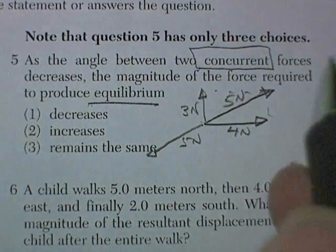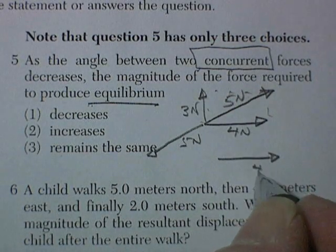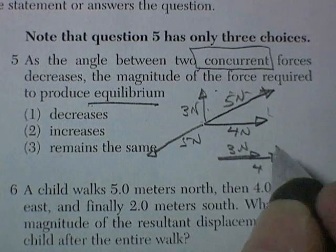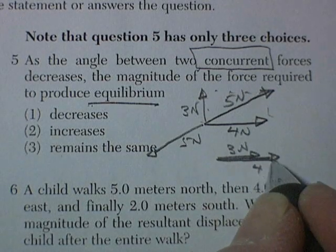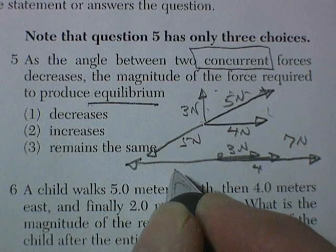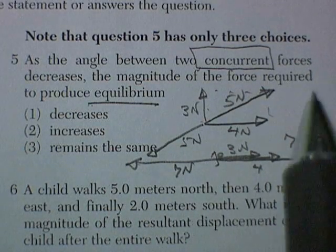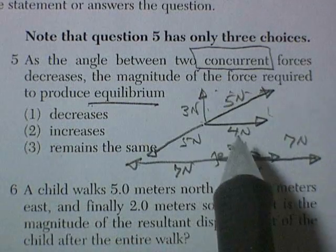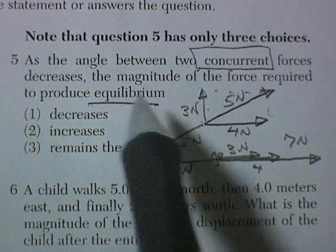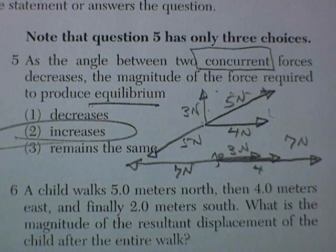Now let the angle decrease — bring it right down to zero degrees. A 4-newton and 3-newton force at zero degrees gives a resultant of 7 newtons, requiring 7 newtons in the opposite direction for equilibrium. So as the angle decreases, the magnitude of the force required to produce equilibrium gets bigger — it increases.